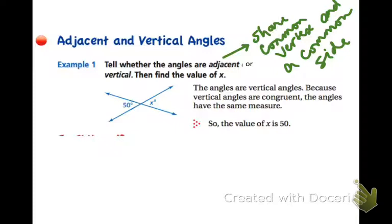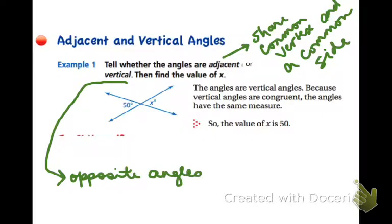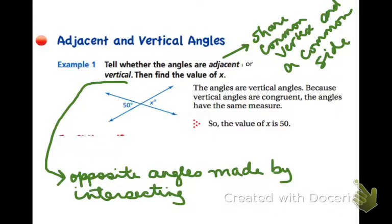Vertical angles, on the other hand, are opposite angles and they are formed by intersecting lines. Here's an important thing about vertical angles: they are congruent. So that's going to be very helpful.